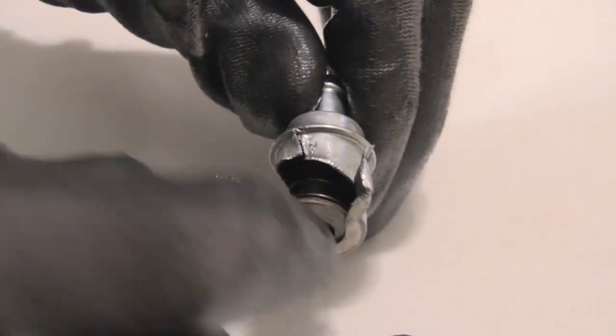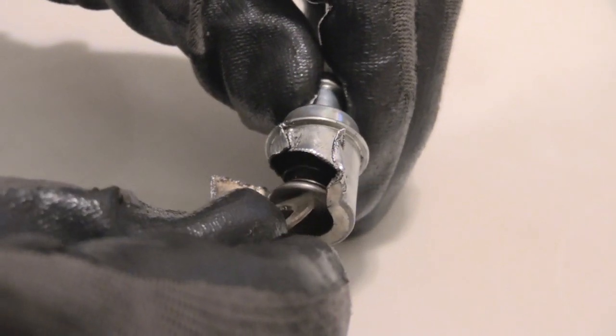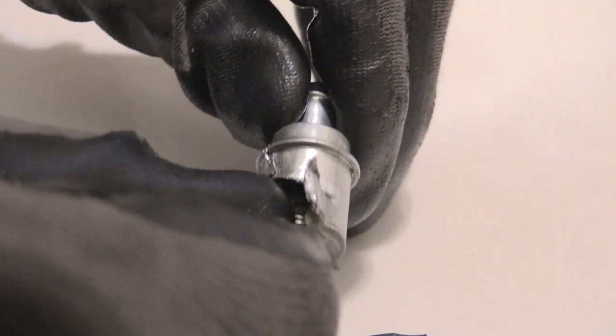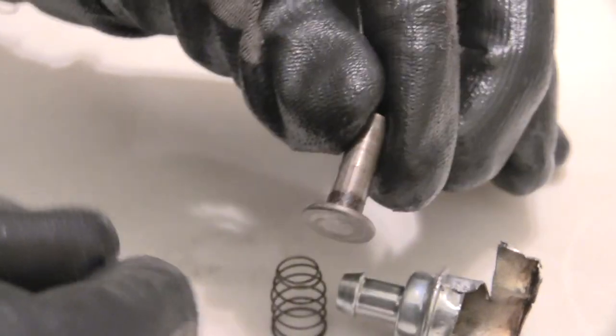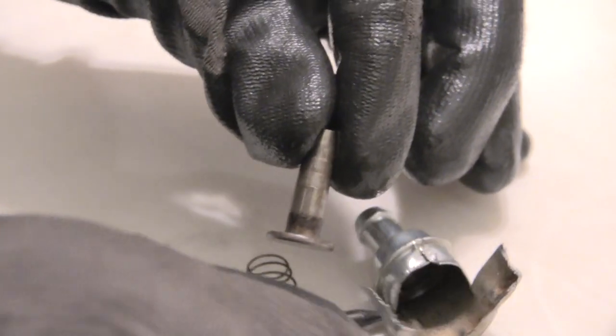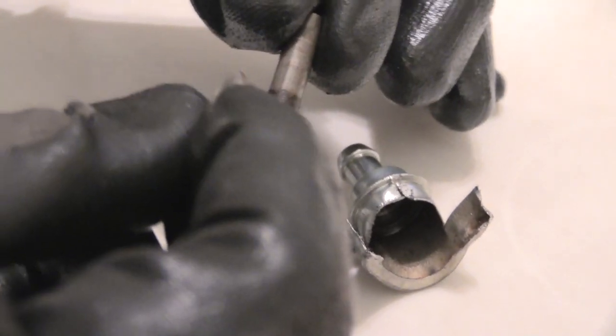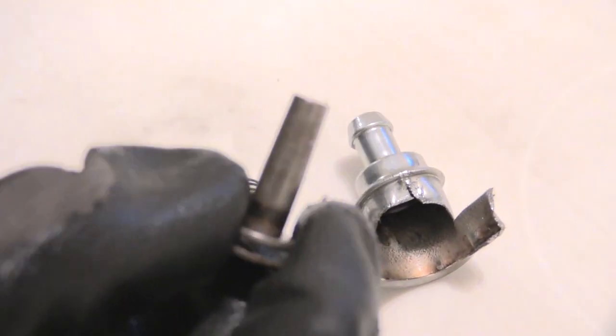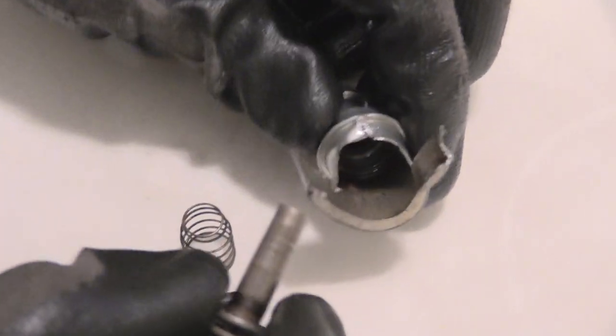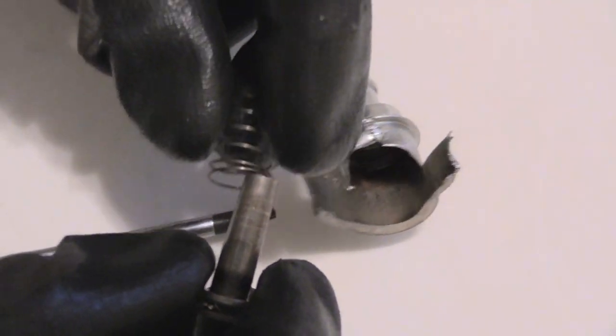Once again folks, I just want to show you what was inside of a PCV valve, which is a spring, the valve part right here, and then you have a little washer that's at the actual bottom of it. Like I said before, this is what people are looking for, listening for, when they're shaking it.